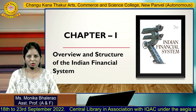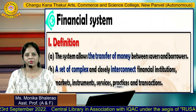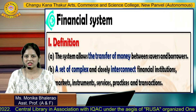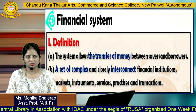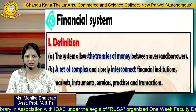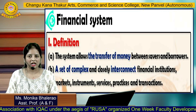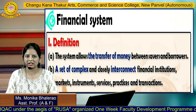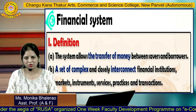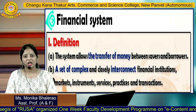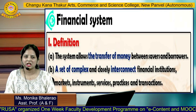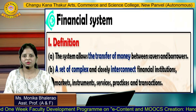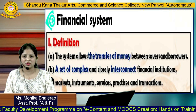So here is the first topic: the definition of the financial system. What is the financial system? The system allows the transfer of money between the savers and the borrowers. You can also say that it is a set of complex and closely interconnected financial institutions, financial markets, instruments, services, practices, and transactions.